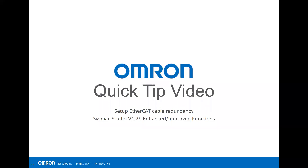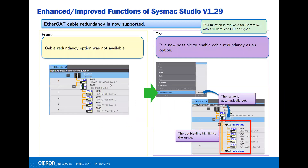Welcome to the online quick tip video. In this video I'm going to show you how to set the EtherCAT cable redundancy using SysMax Studio version 1.29. In the previous version you're not able to create a redundancy option when using EtherCAT. With SysMax Studio version 1.29 and controller firmware version 1.40, it's now possible to enable the cable redundancy as an option.